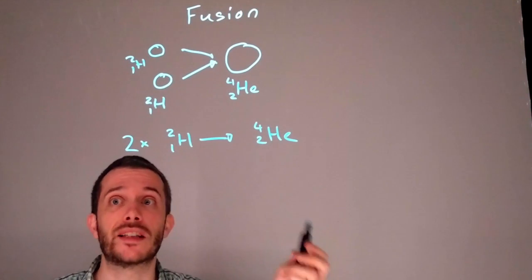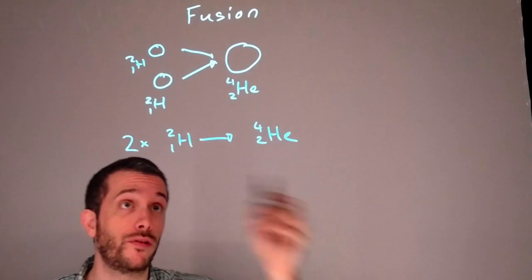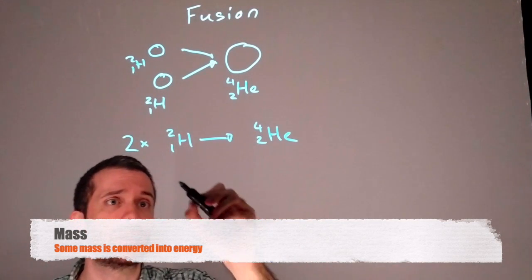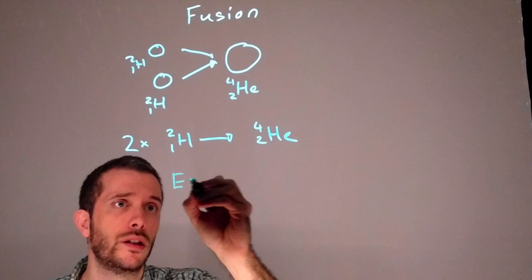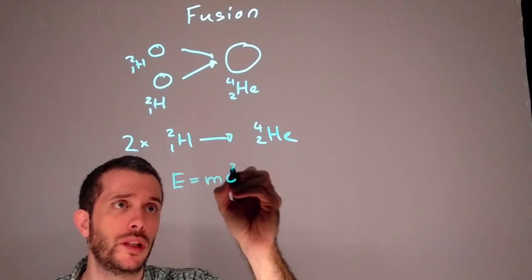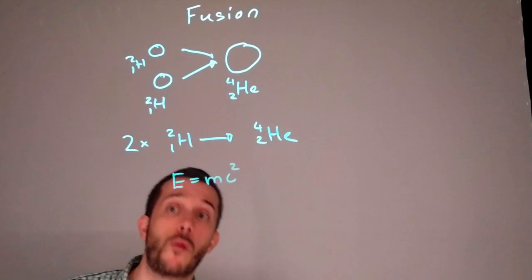However the mass itself is not conserved. By doing this process part of the mass is converted to energy according to E equals mc, c being the speed of light, squared.